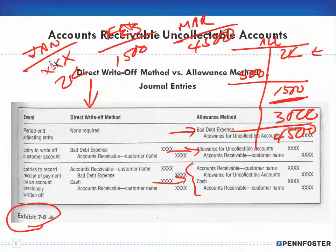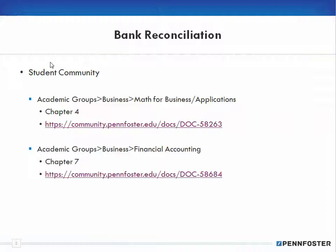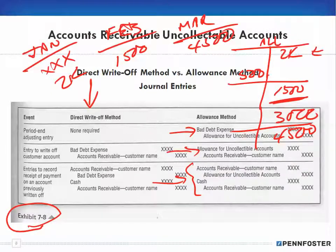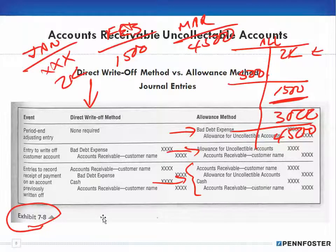I hope you understood that. I know I've been hammering it again and again in the previous video on the allowance method and again in this video on the differences between the two methods' journal entries. If not, pause and rewatch, or contact an instructor. In the next video we'll talk about the percent-of-sales method, and the following video will cover the aging method to determine how much to adjust for the allowance method.